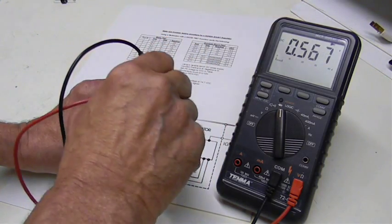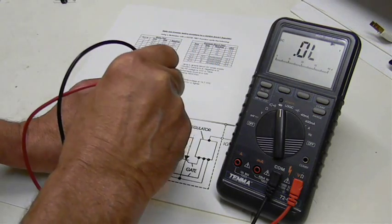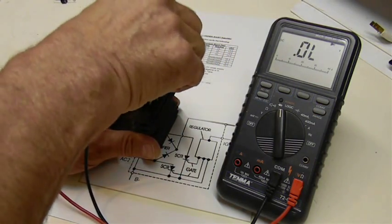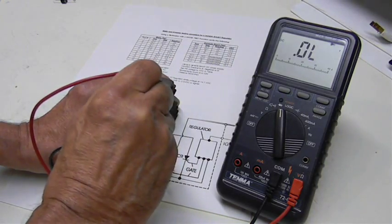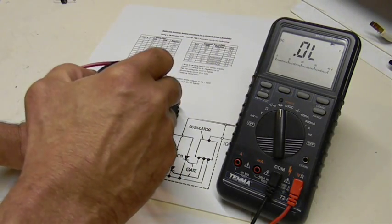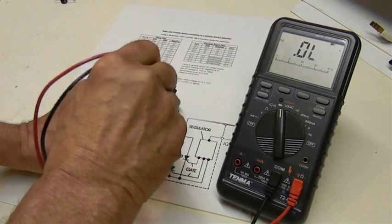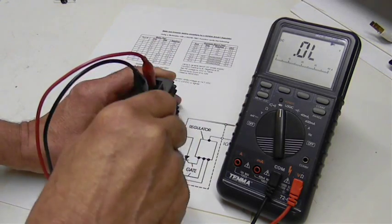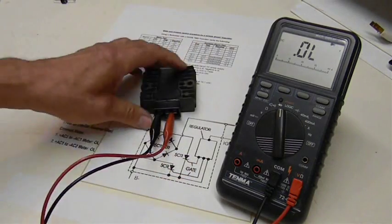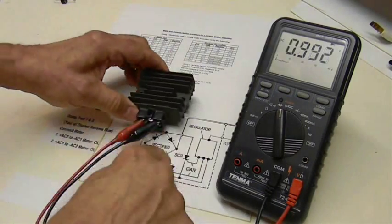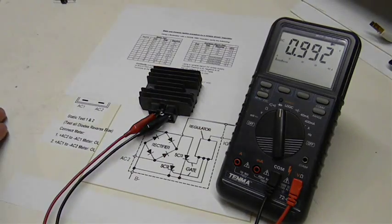Then we've got B to AC1, open loop, B to AC2, all the diodes are reversed, open loop, and then B to B minus, open loop. So basically, the regulator, the rectifier in this rectifier regulator is good. All the diode junctions seem to be okay.